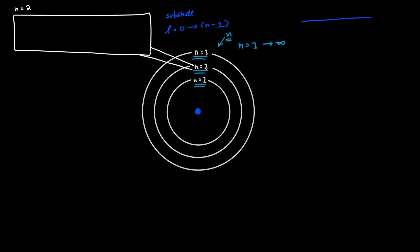The values of l — we can make a little table here. The numerical value of l can be zero, one, two, or three. The letter values: zero corresponds to an s orbital, one corresponds to a p orbital, two corresponds to a d orbital, and three corresponds to an f orbital.